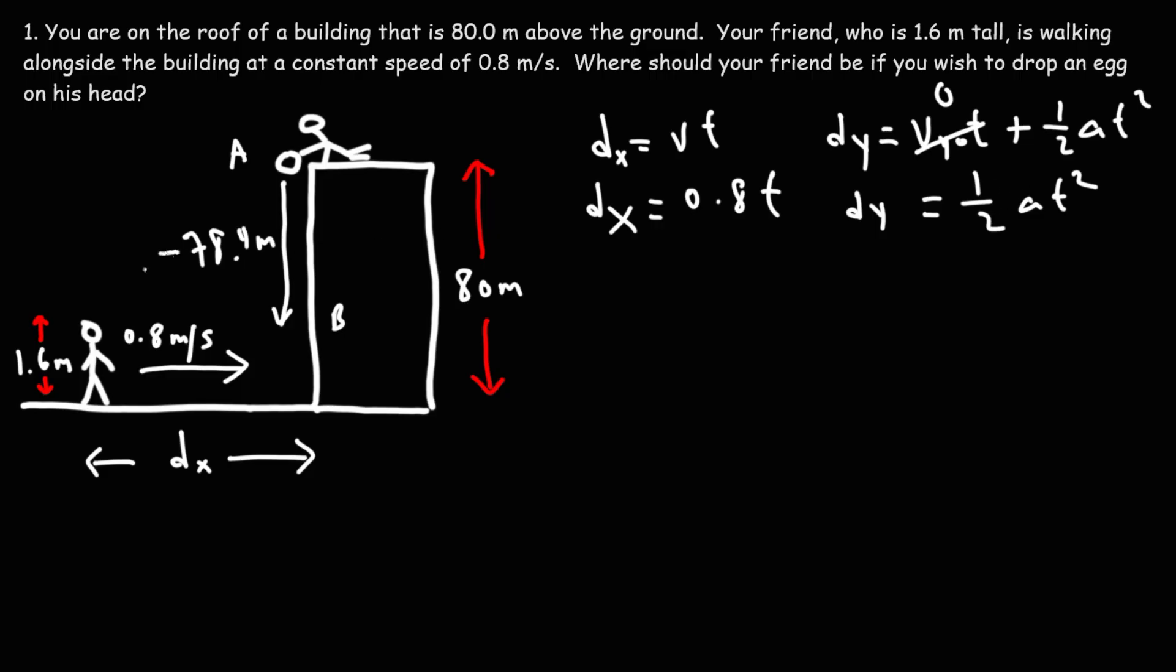So now, the displacement in the y direction is negative 78.4 because you're going down. The distance is positive 78.4. So in order for this formula to work, if you're going to use the negative value for displacement, you should use the negative value for acceleration because time has to be positive.